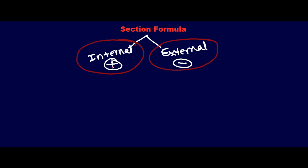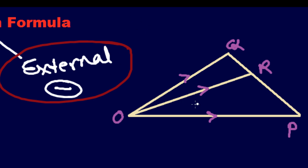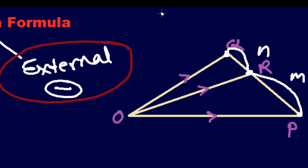Let's talk about internal section and how we find the internal section formula in vector analysis. For that I'll draw a small figure. As you can see in the figure, we have a line PQ, and that line PQ has been divided by point R in some ratio. Let's say this is three parts and this is two parts, so it's a ratio.